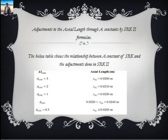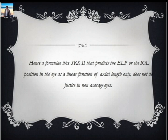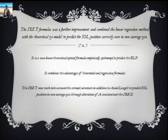Until 1996, when the Holladay formula first came out, it was assumed that a longer eye would have a longer ACD and a shorter eye would have a shorter ACD. The work of Holladay in 1996 showed that this was actually a flawed concept and may not hold true all the time. Hence, the concept of the SRKT formula came in, which was a further improvement over SRK2. SRK2 became obsolete after the SRKT formula arrived.